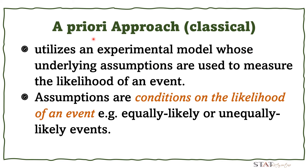The a priori approach, some call it the classical approach or classical probability. It utilizes an experimental model whose underlying assumptions are used to measure the likelihood of an event. The assumptions are conditions such as equally likely or unequally likely events. For example, in equally likely events, when a coin is tossed, heads can have the same likelihood as tails.